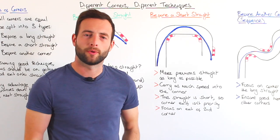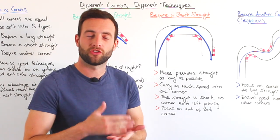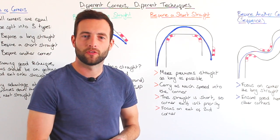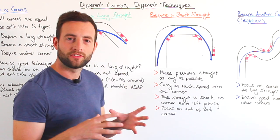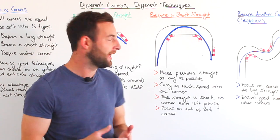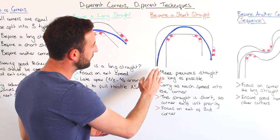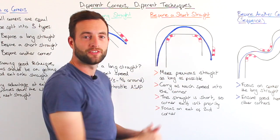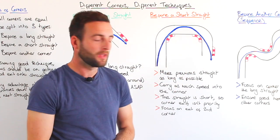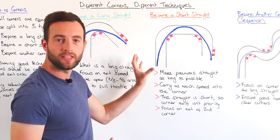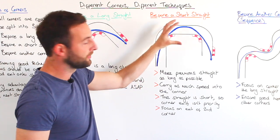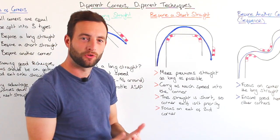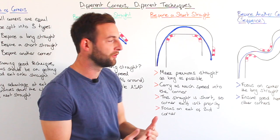The next type of corner is a corner that precedes a short linking straight that then goes into another corner. On these types of corners the important areas are when you enter the first corner and when you exit the second corner. When we're entering the first part of the two corners we want to carry into the corner as much speed as possible.